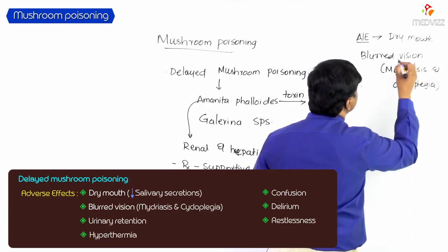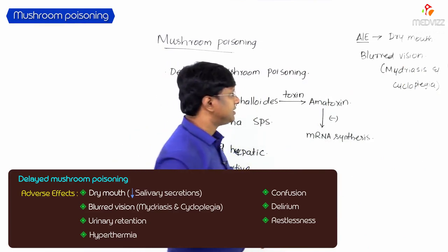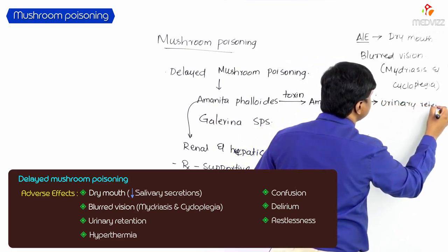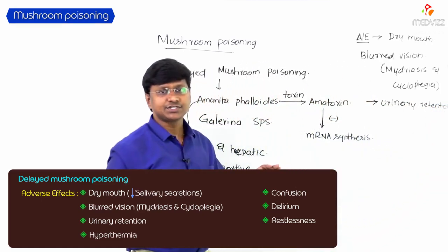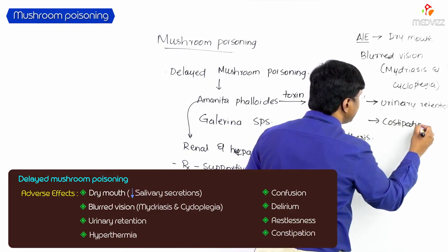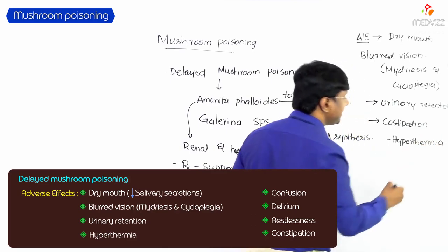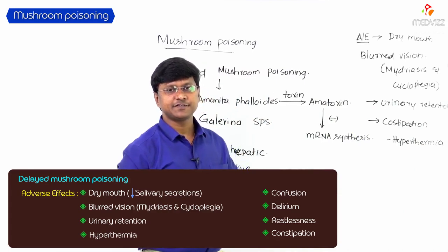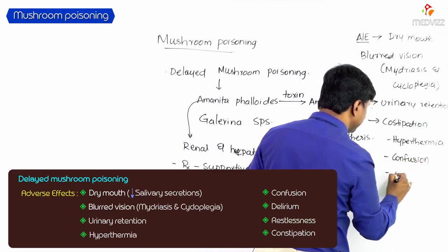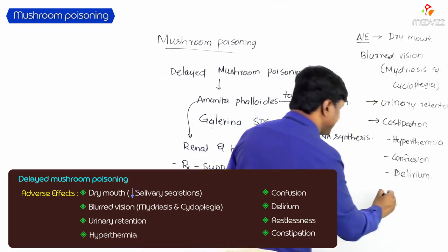Due to mydriasis and cycloplegia they will have blurred vision. These anticholinergic drugs also cause urinary retention, reduced gastrointestinal motility leading to constipation, hyperthermia, and CNS manifestations including confusion and delirium.